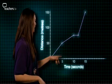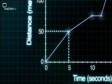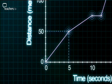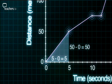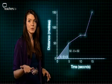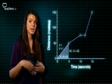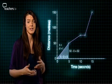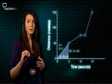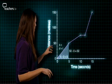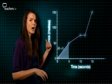Here we've got a journey with four different sections, or legs. The first leg starts at (0,0) and travels along to (5,50). By drawing a triangle on the graph, it helps us see more clearly what's going on — we've travelled 50 metres in 5 seconds. From this we can work out the speed: speed equals distance divided by time, or s = d/t. With distance in metres and time in seconds, the units will be metres per second. So 50 divided by 5 gives us a speed of 10 metres per second.